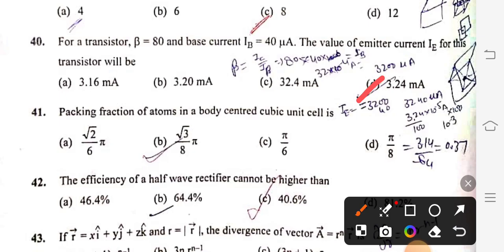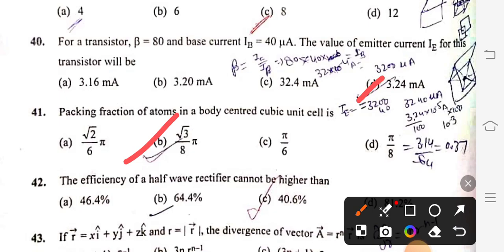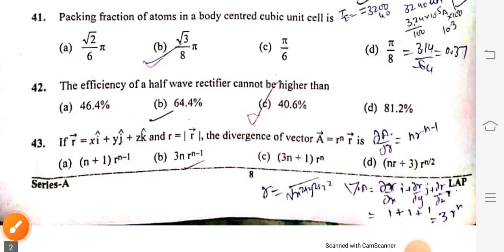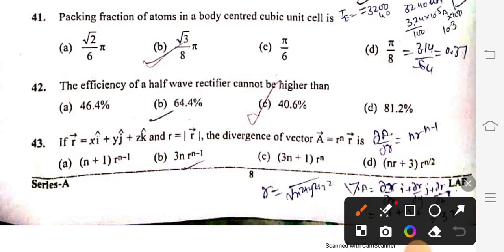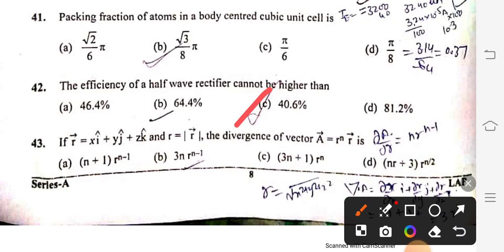Question 41: Packing fraction of atoms in a body centered cubic unit cell is root 3 by 8 pi, option B. Question 42: The efficiency of a half wave rectifier cannot be higher than 40.6%, option C.